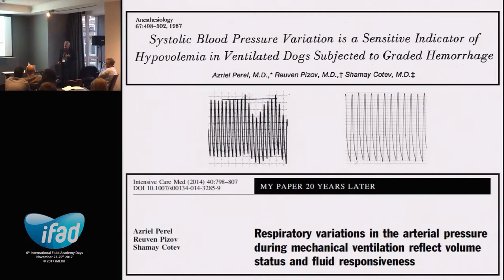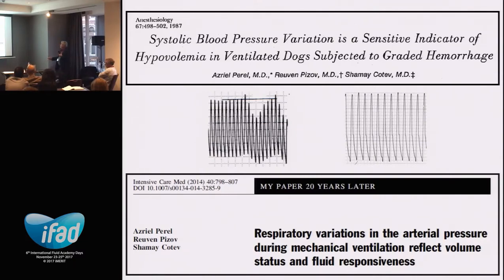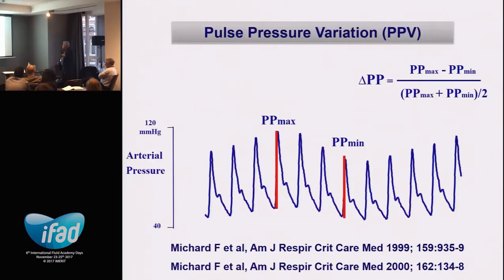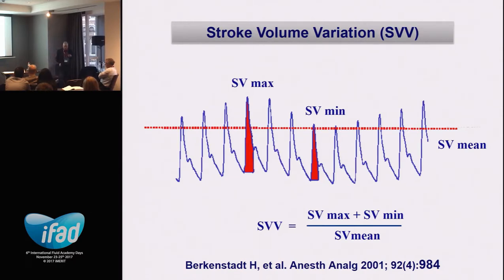Let's go through some of the dynamic parameters measurable in mechanically ventilated patients, where the mechanical breath can be considered a stimulus to the cardiovascular system, decreasing venous return. If the patient is fluid responsive, there is a decrease in stroke volume and all its surrogates. Pulse pressure variation is more accurate than systolic pressure variation, based on comparing the maximal to minimal pulse pressure over the respiratory cycle. With pulse contour continuous cardiac output monitoring, we now have stroke volume variation serving the same purpose.